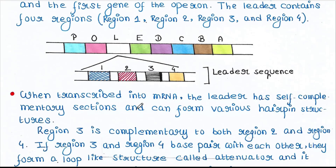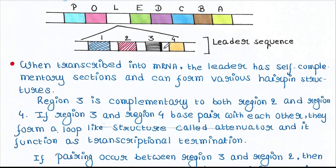When transcribed into mRNA, the leader has self-complementary sections and can form various hairpin structures. The leader contains four regions. Region 3 is complementary to both region 2 and region 4. If region 3 and region 4 base pair with each other, they form a loop-like structure.